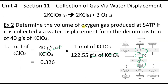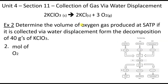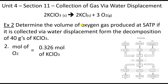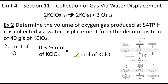Substance B is oxygen gas. In step two, we carry forward 0.326 moles and set up the mole ratio from the balanced equation: 2 moles of KClO3 on the bottom and 3 moles of O2 on top. Cancelling units, we get approximately 0.489 moles of oxygen gas.